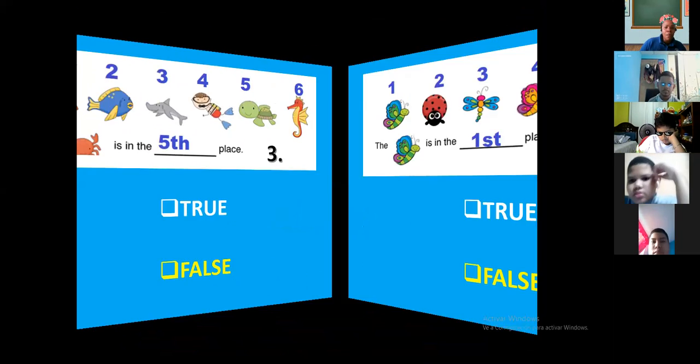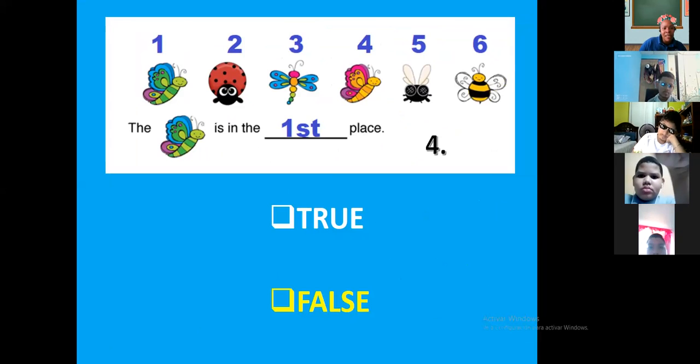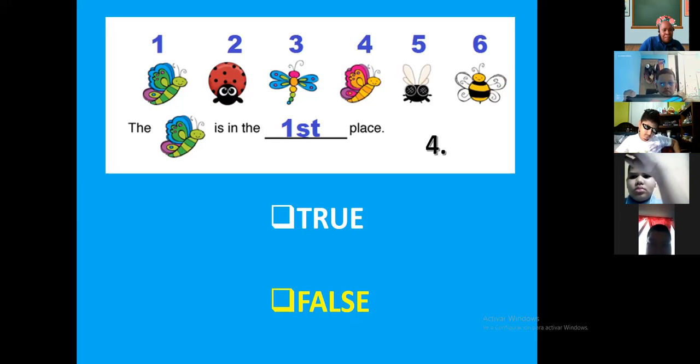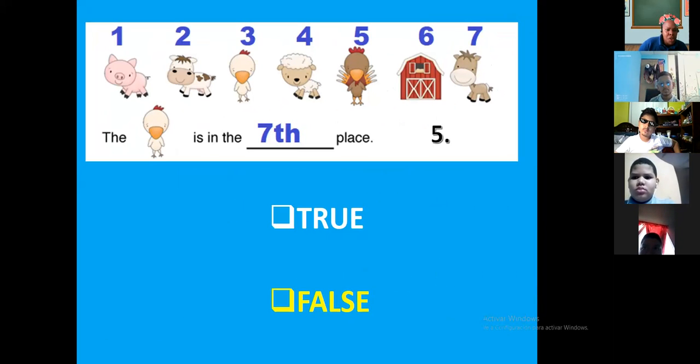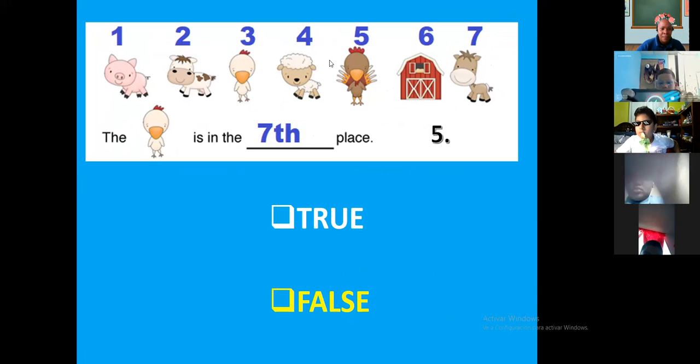The crab is in the 5th place, true or false. Number four. Number four. The butterfly is in the 5th place, the green butterfly. The pink butterfly or yellow butterfly. The blue or green butterfly is in the 1st place, true or false.